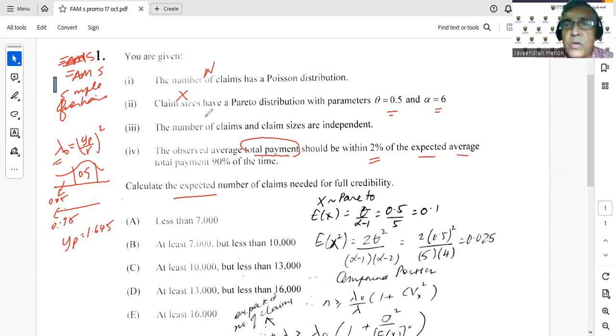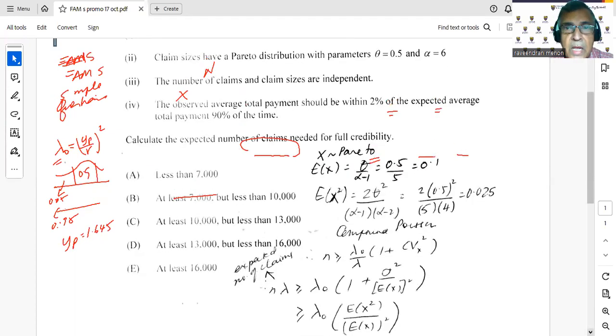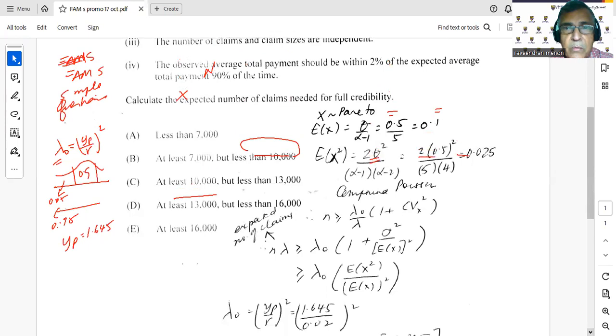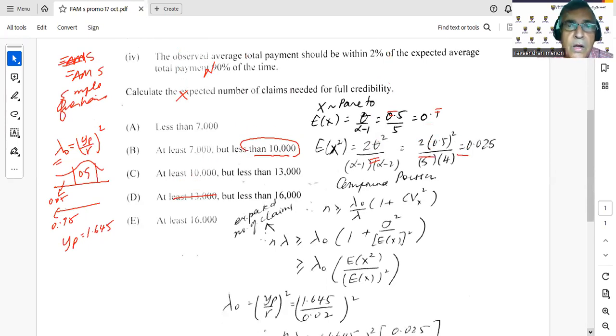We're looking at Pareto, so you can look up your tables and write down the important things - the expected value of X and the second moments. I've done that here.